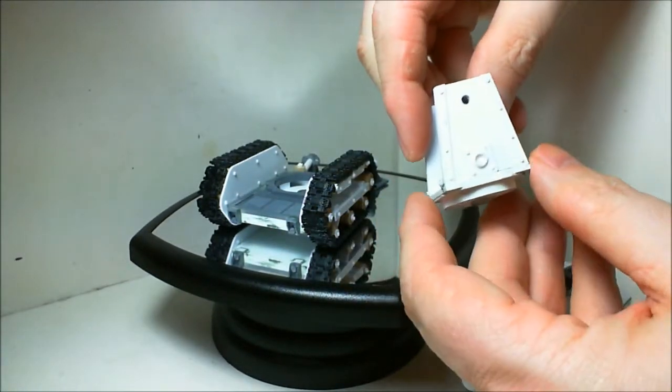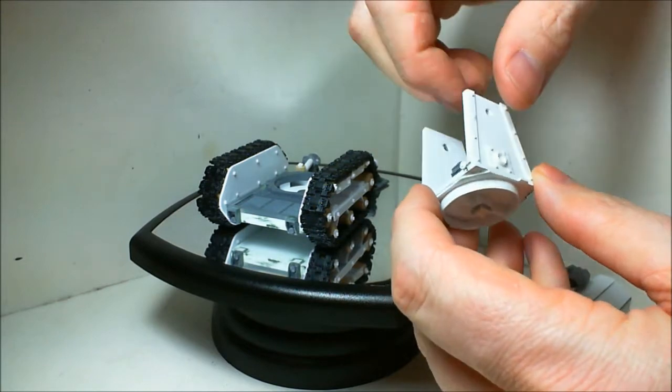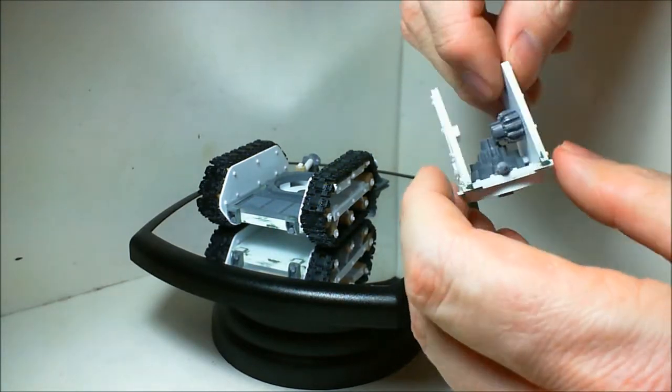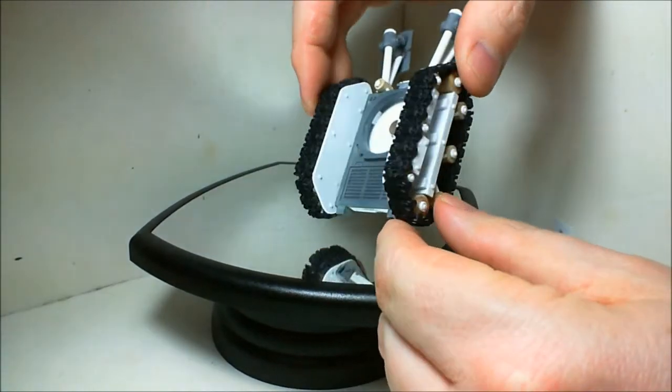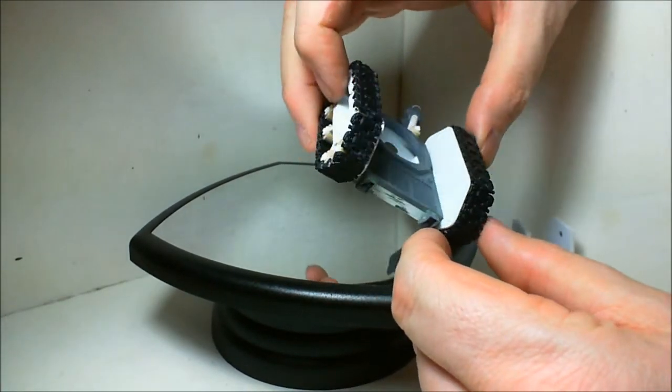This part here is magnetized on. Some nice rivets on here. I think it looks really good, the rivet work on there. And here's the base. Some more rivet work on the inside of the tracks.